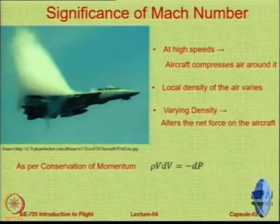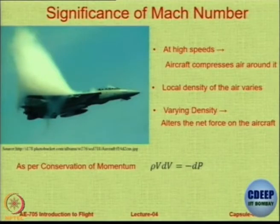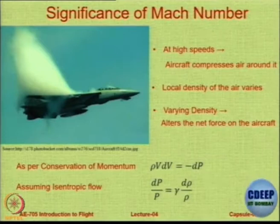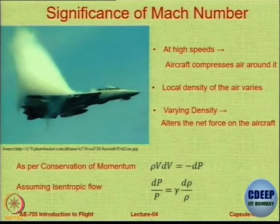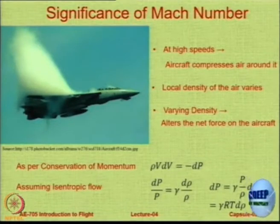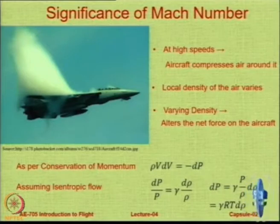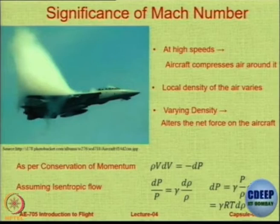If you apply the conservation of momentum, it can be very easily shown that rho V dV is equal to minus dP, the minus sign showing that if one increases the other decreases and vice versa. Similarly, if you assume isentropic flow — I will define isentropic flow very soon — in that condition it can be shown that the relationship gamma dP by rho is valid. Using these two quantities, one can derive an expression which says that dP, the change in pressure, is equal to gamma RT times d rho. Now, the root of gamma RT is the speed of sound. So gamma RT is speed of sound squared — a squared — and a is basically M times V.